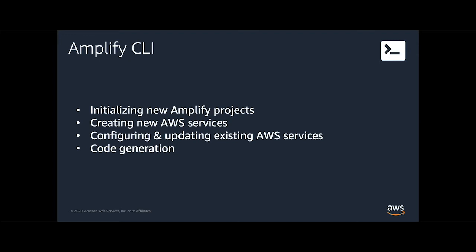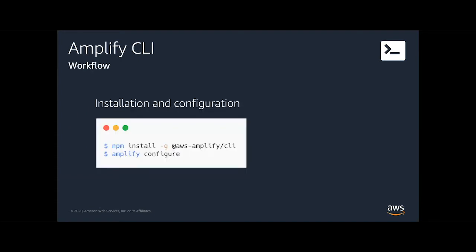The CLI also does boilerplate code generation for popular types of Lambda functions — for instance, a Lambda that interacts with S3 or Amazon Cognito. You can install the CLI via NPM, and we're also releasing the ability to install using curl, which is actually six times faster than the NPM installation. Today you would install it using NPM. NPM install gives you the global CLI, and then you run the Amplify keyword to do different things.